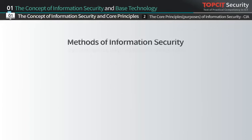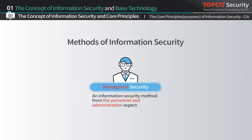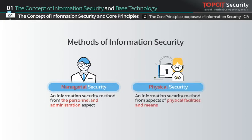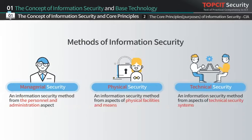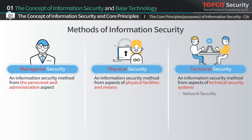Information security methods can be viewed from three different aspects: the personnel and administrative aspects to protect sensitive information in an organization, the aspects of physical facilities and means, and the technical security system. The technical security method can be divided into network security, application security, database security, system security, and more.